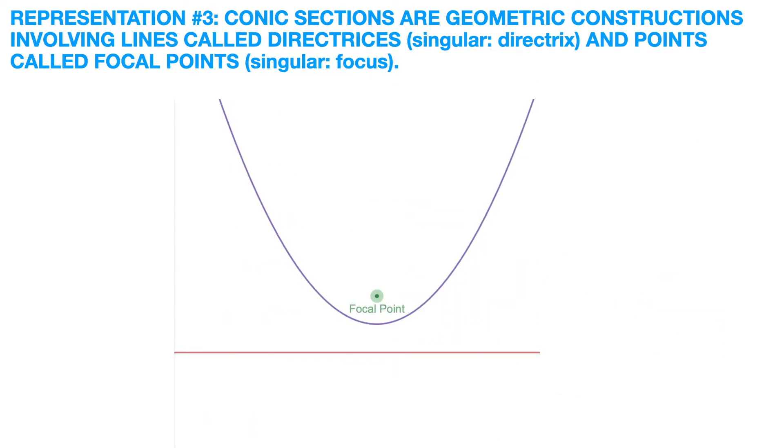Thirdly, a conic section can be thought of as a curve in which every point has a particular relationship to special points called focal points and a particular line called the directrix, and in this case a parabola is formed.